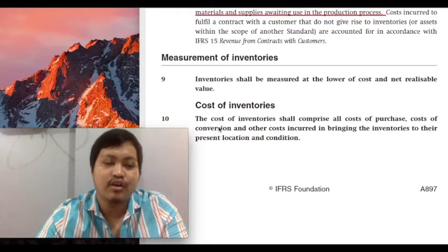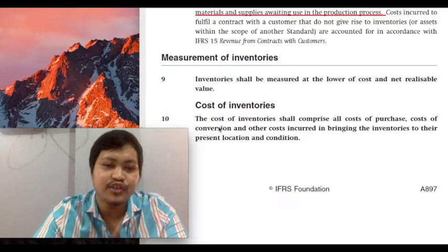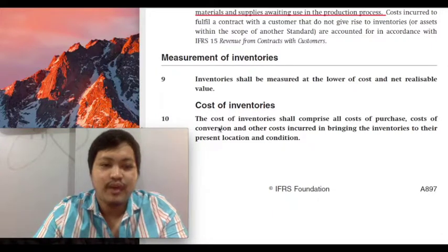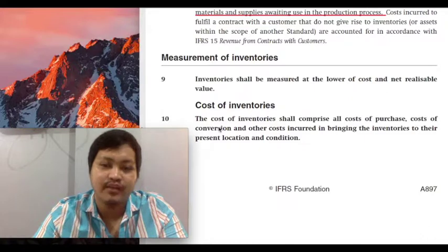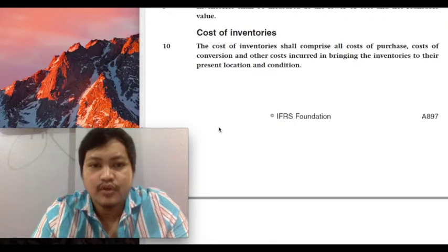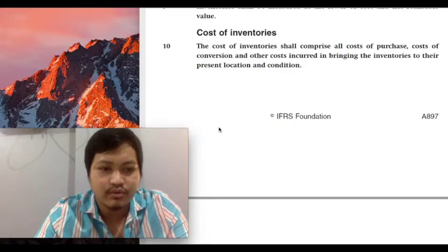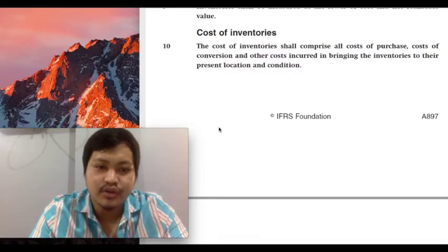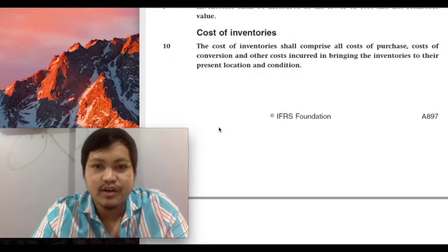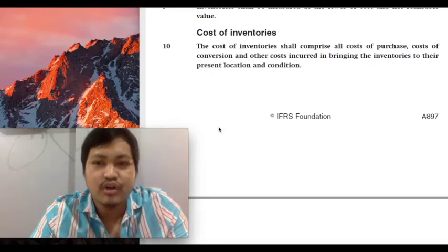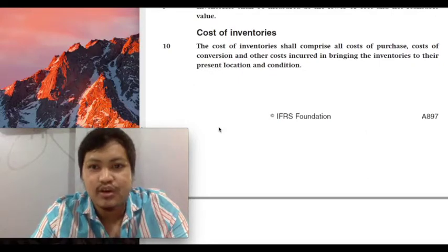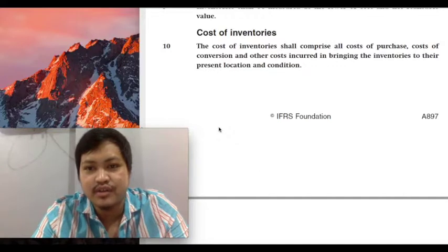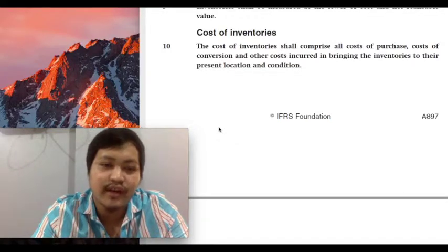We'll have to focus on the cost — what then constitutes cost, what will comprise the cost that we will attribute or assign to our inventories. Paragraph 10 would be instructive on what will comprise the cost of an inventory. It says here that the cost of inventories will comprise all costs of purchase, cost of conversion, and other costs incurred in bringing the inventories to their present location and condition.